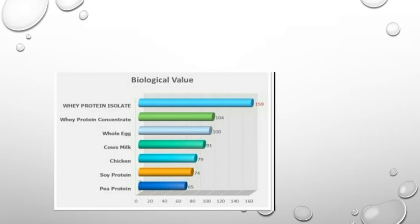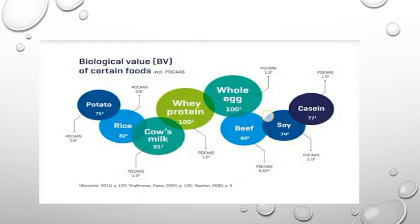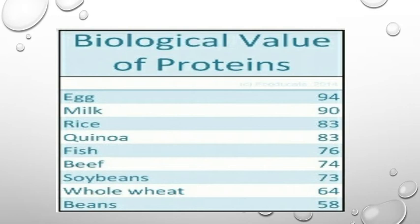From the graph, the biological value for egg is somewhat higher than any other food item: egg 94, milk 90, rice 83, fish 76, beef 74, soybean 73, whole wheat 58.